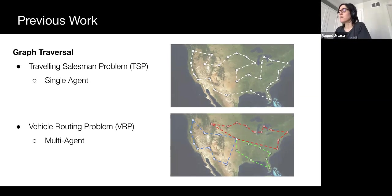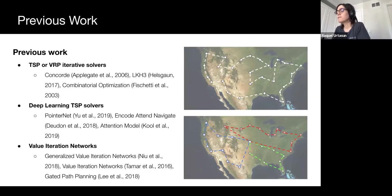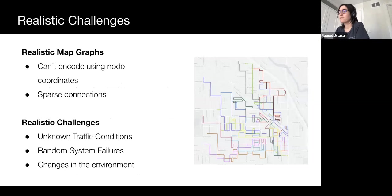There has been a considerable amount of work into TSP or VRP iterative solvers, which can relatively consistently determine the optimal solution to a given problem, as seen in the case of Concorde or LKH3. In the deep learning field, a few steps have been made towards developing a deep learning solver that can be considered more adaptable than iterative solvers, such as the attention model, or AM, and encode, attend and navigate, or EAN. There has also been some work into exploration-based architectures, as seen in the work on value iteration networks.